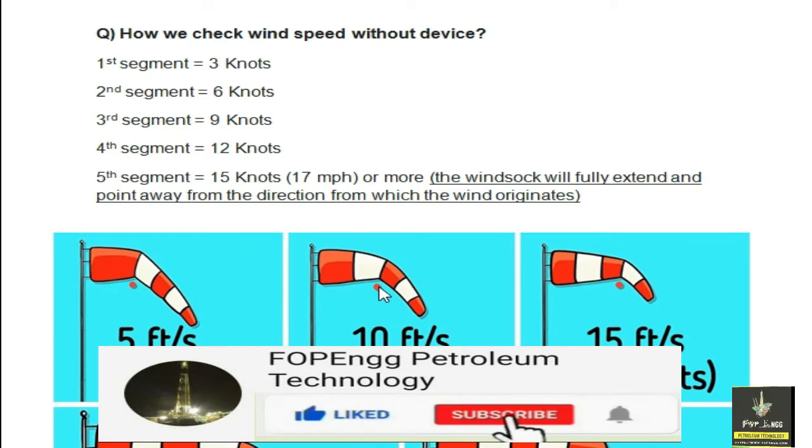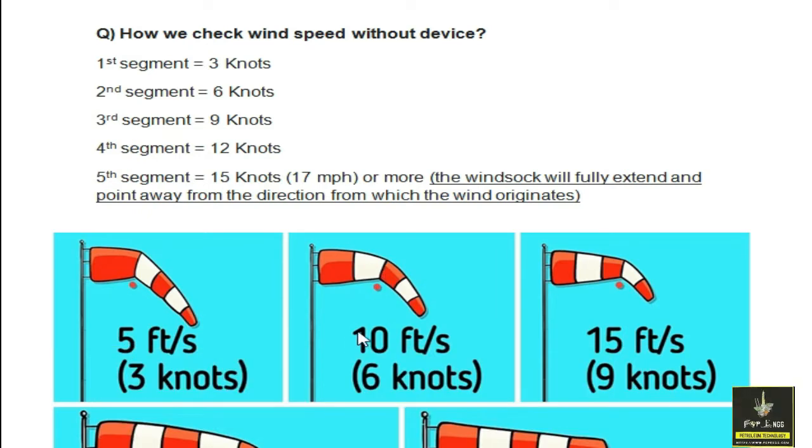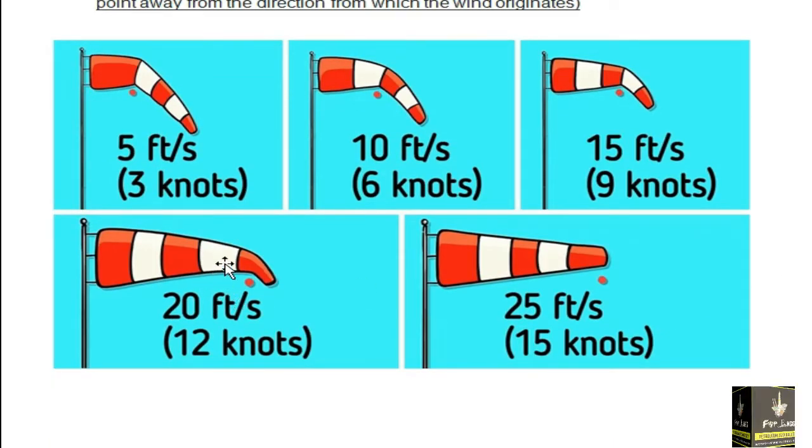If the segment is the second one, this is six knots and the speed is 10 feet per second. If there is a third segment, it means this is nine knots speed and the speed is 15 feet per second. If it is the fourth segment, the speed is 20 feet per second, 12 knots. If it is the fifth segment, the speed is 25 feet per second and 15 knots.